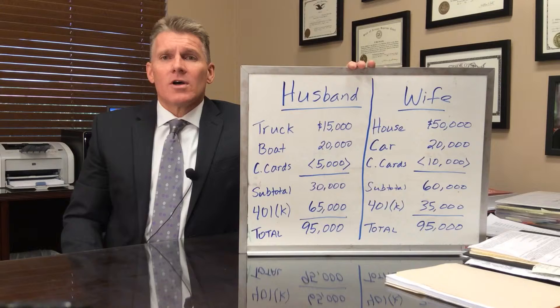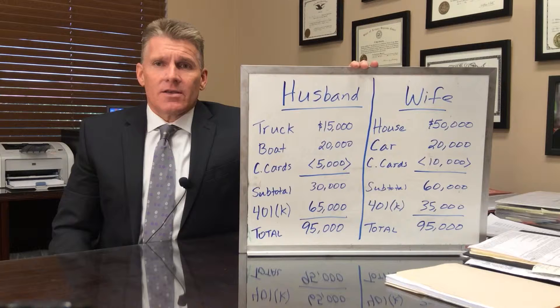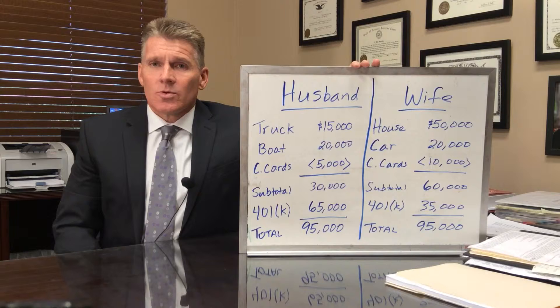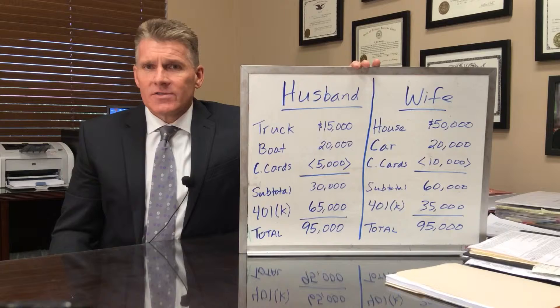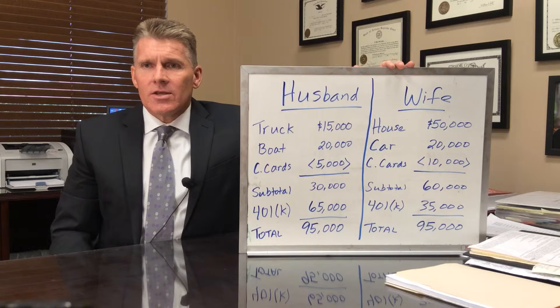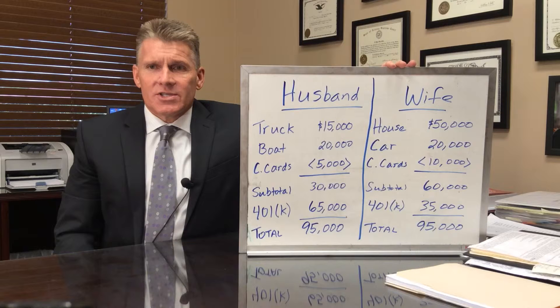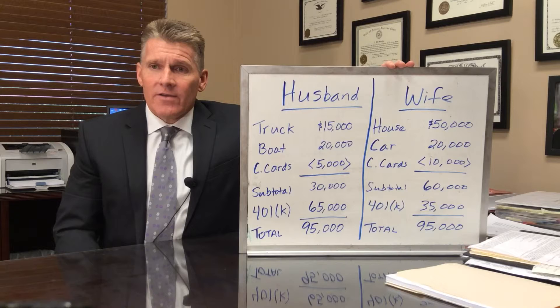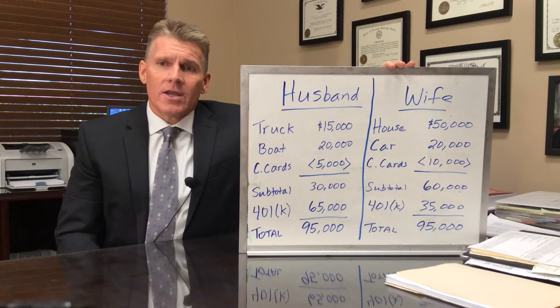Now to divide these assets fairly or equitably, there are any number of ways you could do it. What we're illustrating here is a situation where the wife is going to be awarded the home, the husband is going to be awarded the truck he drives, and the wife is going to receive the car she drives. Looking at the whiteboard, the wife receives $50,000 in equity in the home, the husband receives the truck, the wife receives the car, and then the credit cards are divided so the wife takes $10,000 of the credit card debt and the husband takes $5,000.